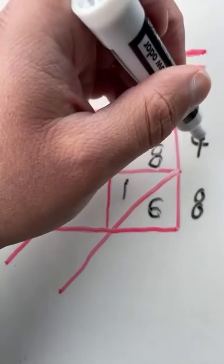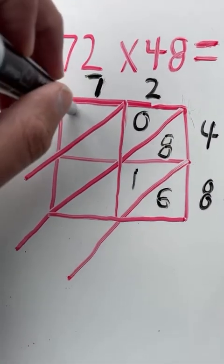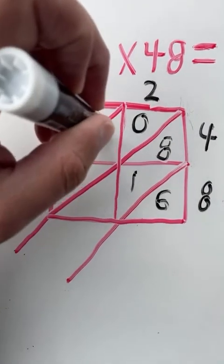Next, we're going to multiply seven times four. That answer is going to go in this square. Seven times four equals 28. Two in the top triangle, eight in the bottom triangle.